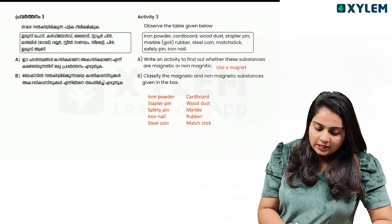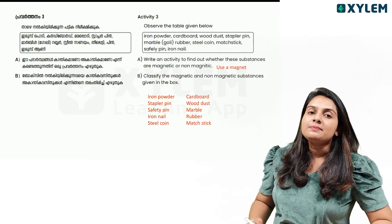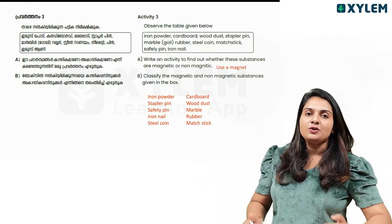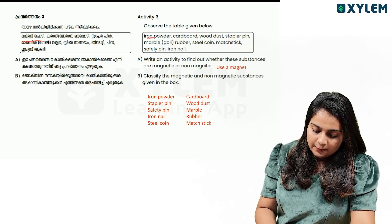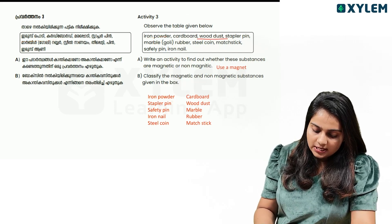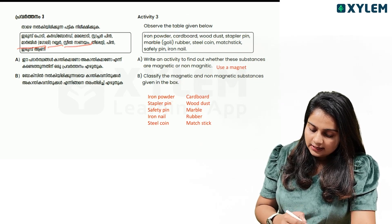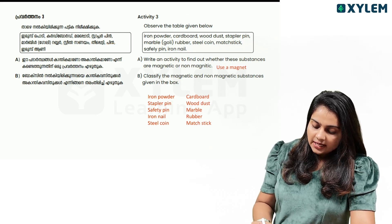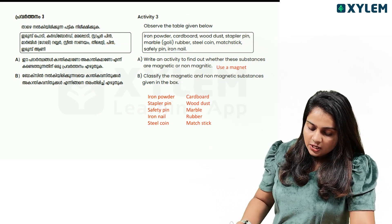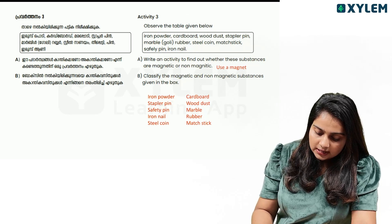The third question: the table is given below. There are items in the box: iron powder, cardboard, wood dust, stapler pin, marble, rubber, steel coins, steel nana, magic pin. Write an activity to find out whether these substances are magnetic or non-magnetic.